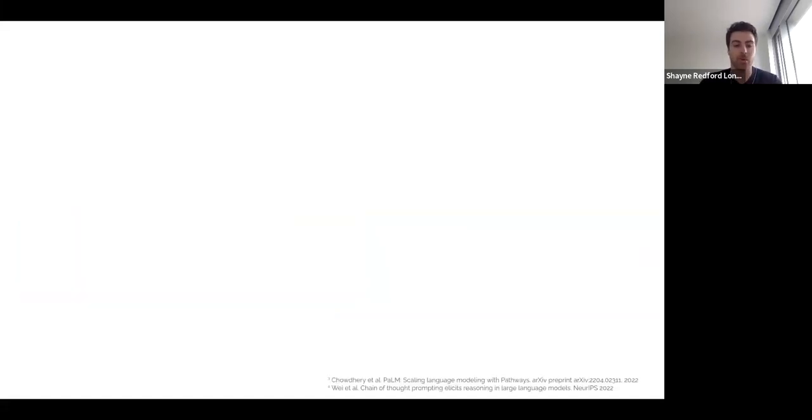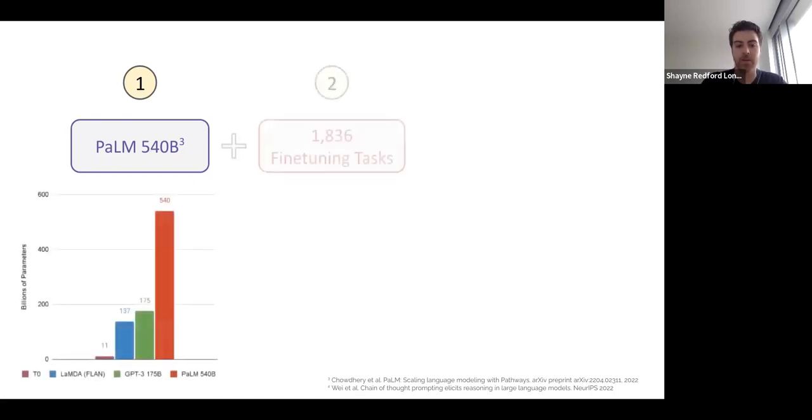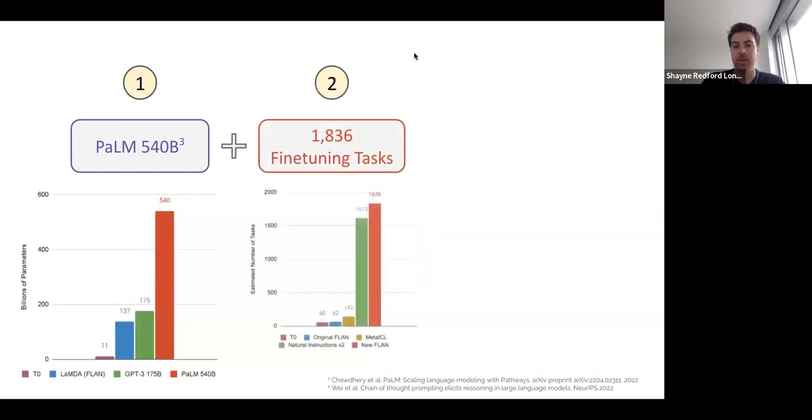As a quick refresher, the Flan-PaLM model combines a number of ingredients. The first is the largest model at that time to be instruction tuned at 540 billion parameters. We use 1,836 fine-tuning tasks from the Flan collection, which is larger than previous sets, and we also include chain-of-thought reasoning data in that fine-tuning collection.